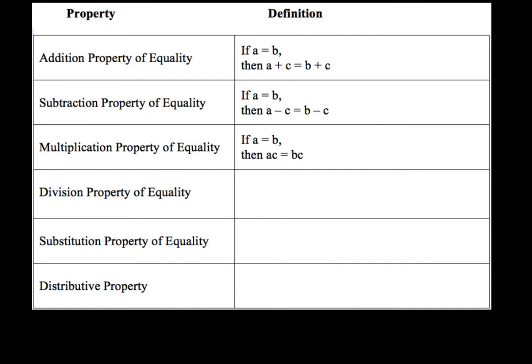Likewise, we've got the division property of equality. The division property of equality says if A equals B and C is not equal to zero, then A divided by C equals B divided by C. So C cannot be zero because you cannot divide by zero, at least up until this point in your mathematical careers. Later on, you'll learn some techniques in other courses on how to deal with dividing by zero.